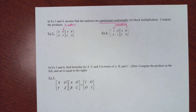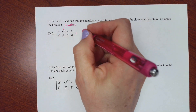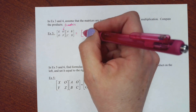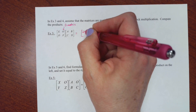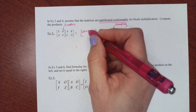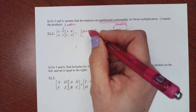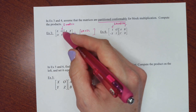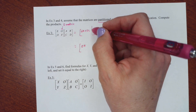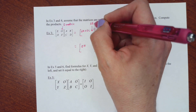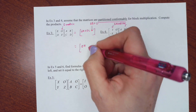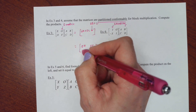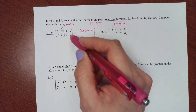For the first block product: top-left is E·A + 0·C. Since 0·C is zero, we just get EA. Top-right is E·B + 0·D, which gives EB. Bottom-left is 0·A + F·C, so the zero part disappears and we get FC. Bottom-right is 0·B + F·D, giving FD. So the result is the block matrix [[EA, EB], [FC, FD]].